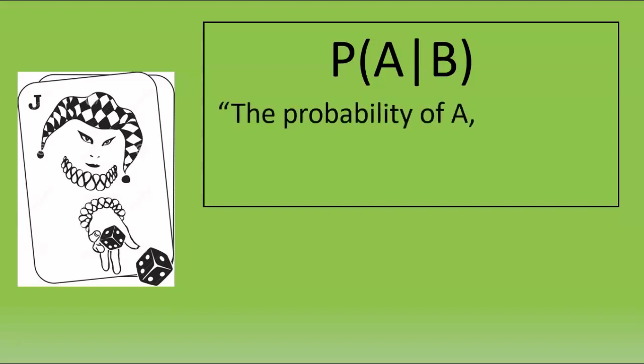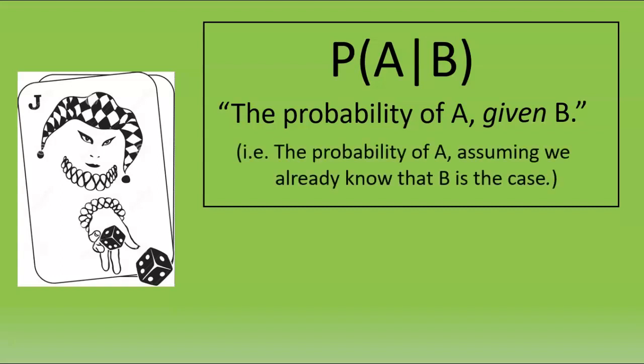We'll need to start with some new notation. We read this expression as the probability of A given B, which means the probability of A assuming we already know that B is the case.